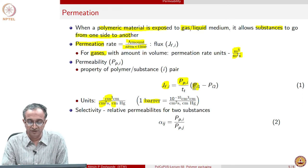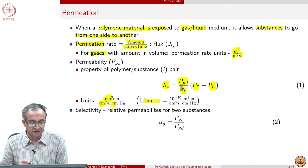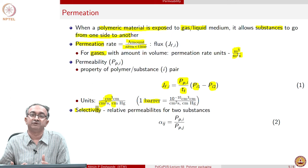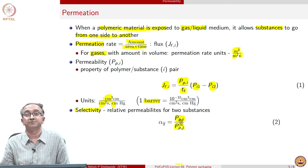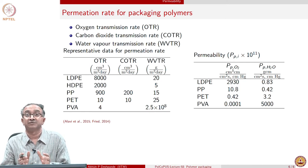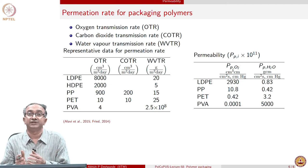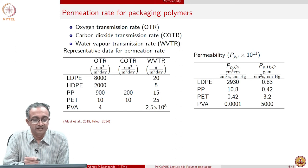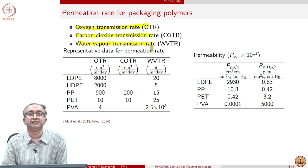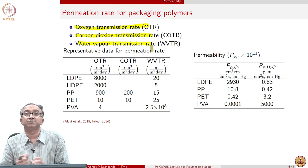Quite often we are also interested in selectivity, especially in separations where we want to preferentially separate one component. In that case, we are interested in the ratio of permeabilities of the same polymer to two different species i and j. When looking at permeation rate, one important substance to be prevented from crossing is oxygen, since oxidation of materials must be prevented — and that is one role packaging plays. This is measured as the oxygen transmission rate (OTR). Similarly, carbon dioxide transmission rate and water vapor transmission rate are also measured.